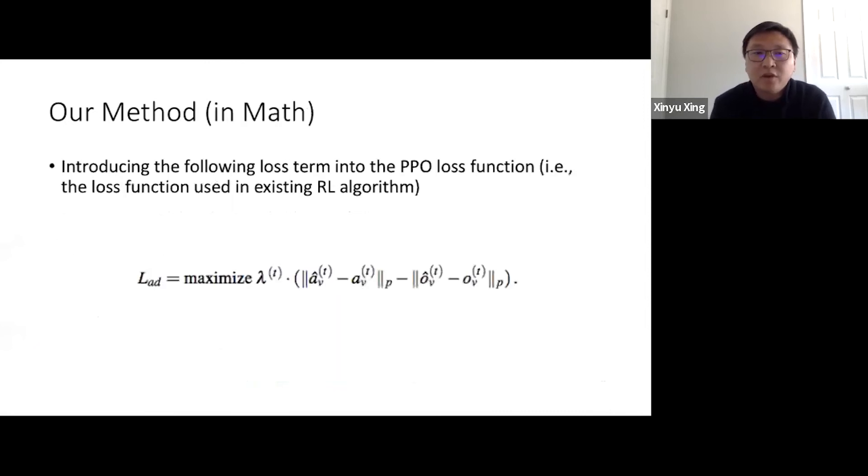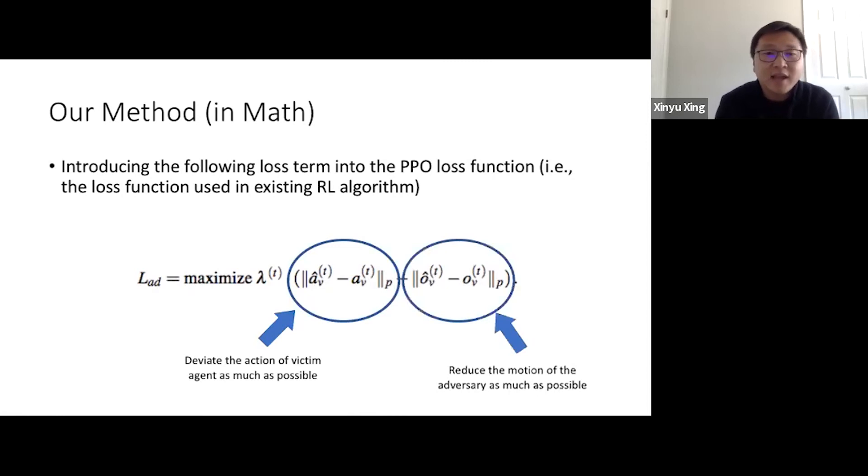Using this idea, we revise the loss function of an existing reinforcement learning algorithm. To be specific, we introduce the following loss term into the PPO loss function. As we can see, the new loss term contains three components. First is the deviation of the action. By maximizing this term, we can deviate the action of the victim as much as possible. The second component is the deviation of the partial observation of the victim agent. By minimizing this term, we can reduce the motion of the adversarial as much as possible. Last but not least, this term indicates the importance of each time step as to the impact of the adversarial motion.